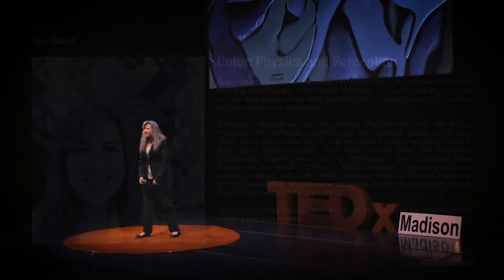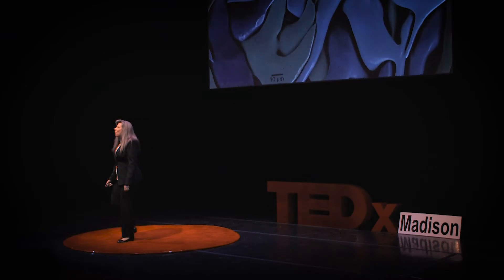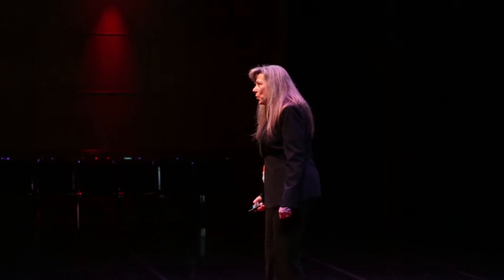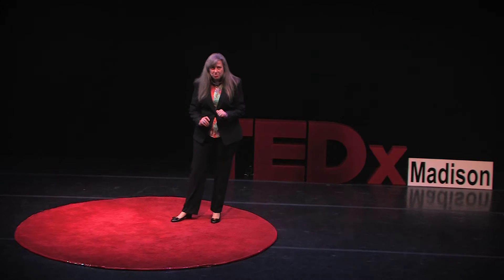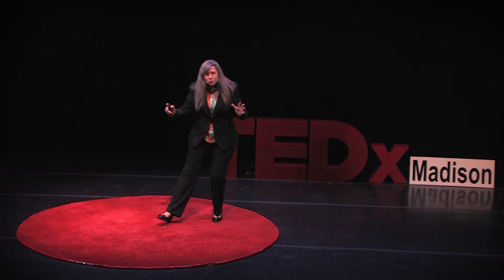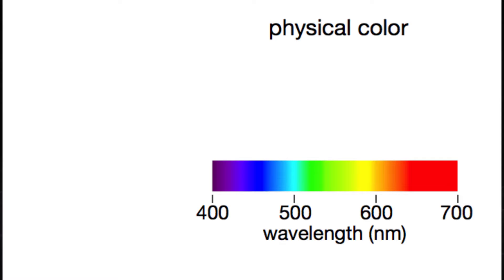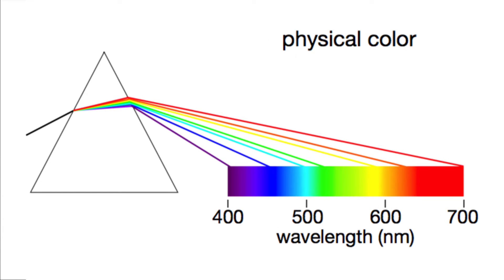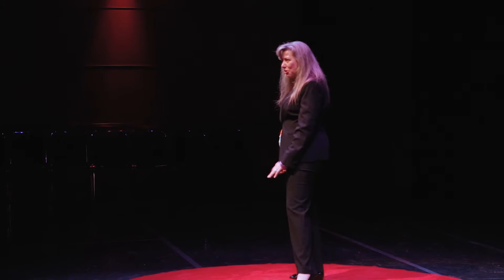Most people see the world in color. But what is it we call color? There are physical colors, or spectral colors, each with its own wavelength between 400 and 700 nanometers. And all those colors combined form white. A prism separates them. But the perceived color is so much more than the simple physical color.